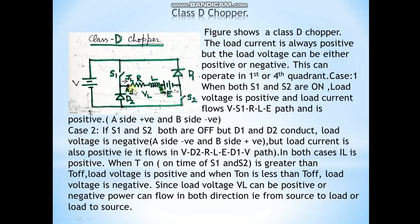If S1 and S2 are both off but D1 and D2 are on, the voltage V is applied across the load and the load voltage is negative. However, load current is still positive because the inductor discharges and current flows through the path V → D2 → R → L → E → D1. So in both cases, load current is positive.